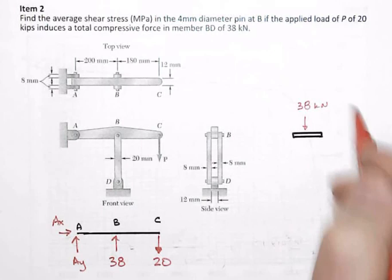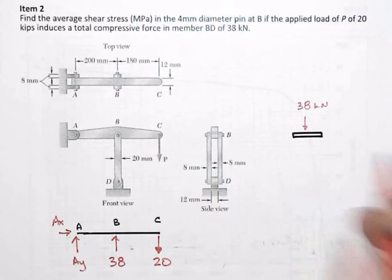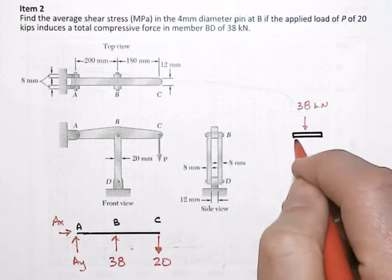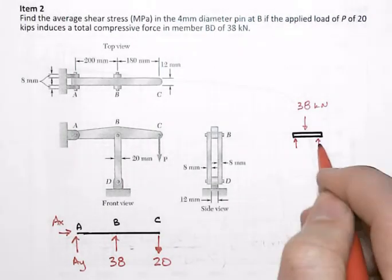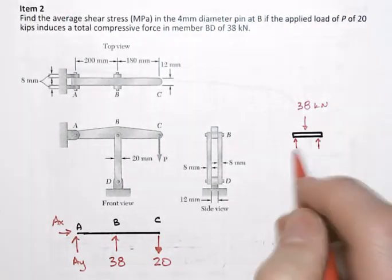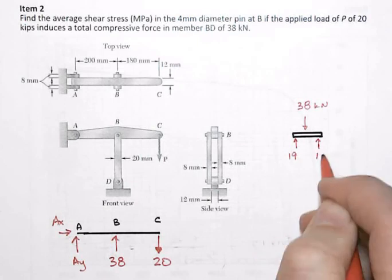And then note that we've got two pieces to BD and so that means that we've got two forces here, the total of which will be 38 kilonewtons, and so at each one of them we'll have 19.